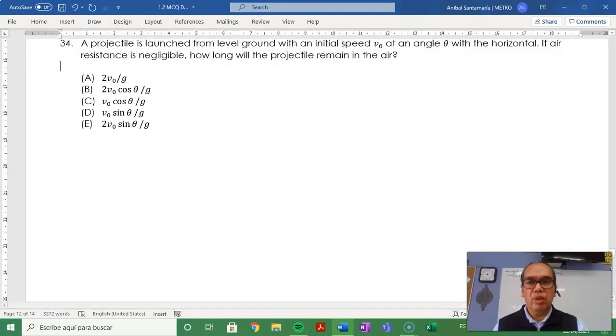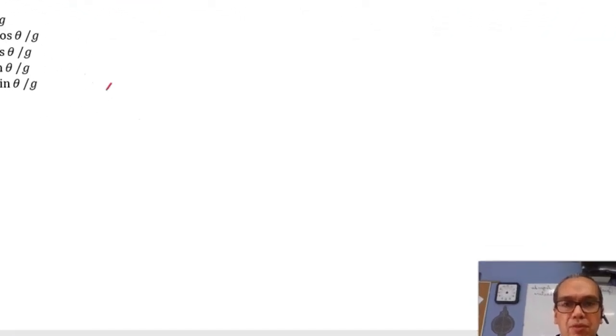The situation we want to describe here is as follows. You have an initial velocity v0 at an angle theta, and due to these initial conditions and the gravitational acceleration, the object follows a parabolic path like this.